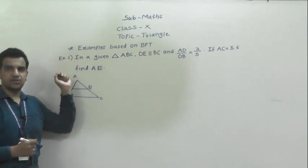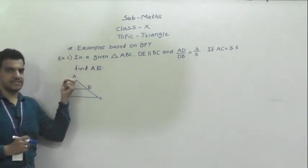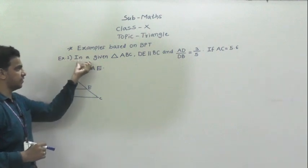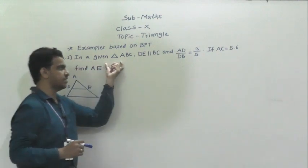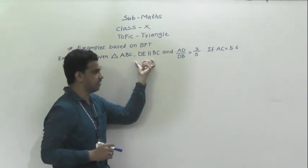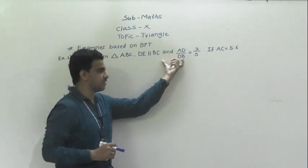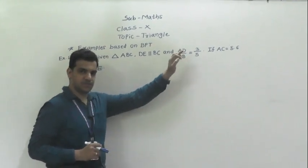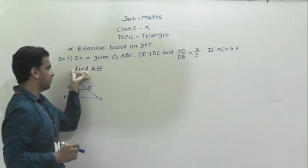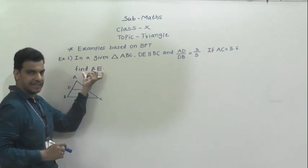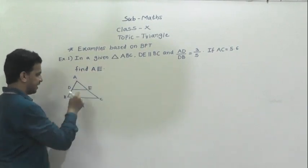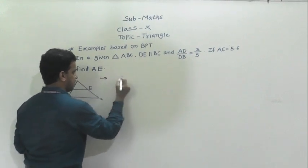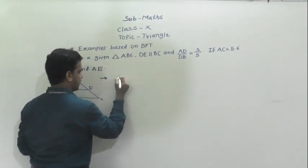Hello students, today we are going to solve examples based on BPT. The first example is: in a given triangle ABC, DE is parallel to BC and AD by DB is equal to 3 by 5. If AC is equal to 5.6 cm, we have to find AE. Since DE is parallel to BC, we can use the basic proportionality theorem.